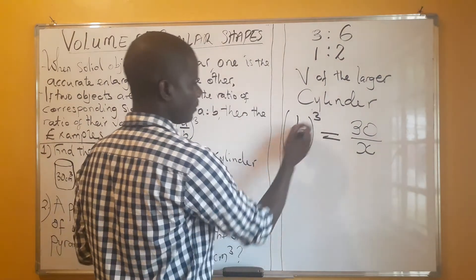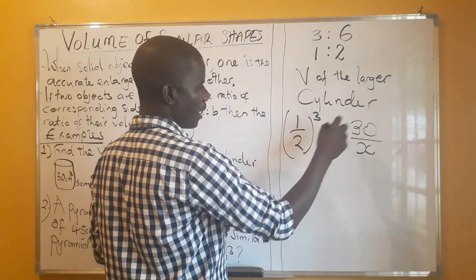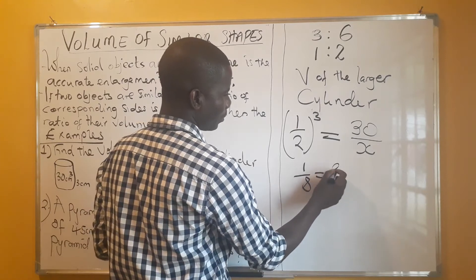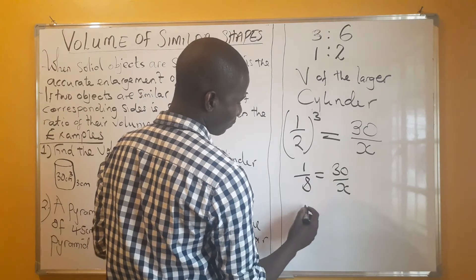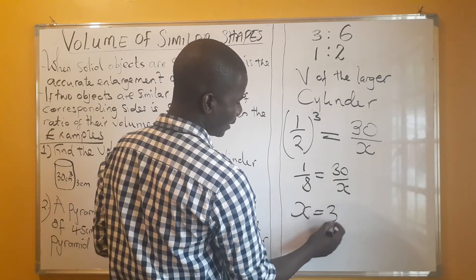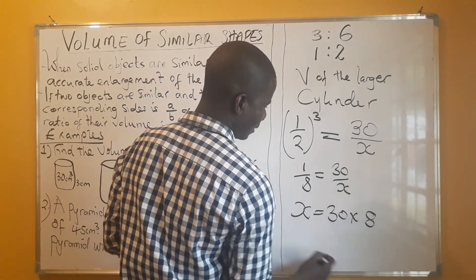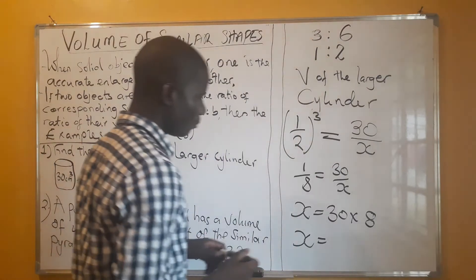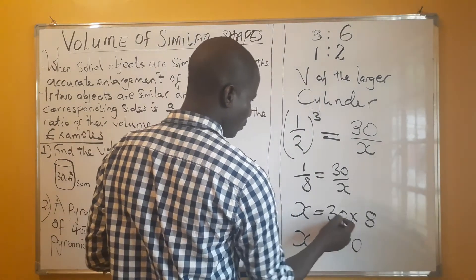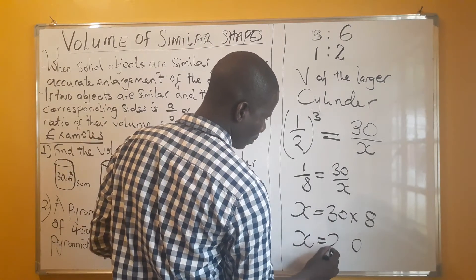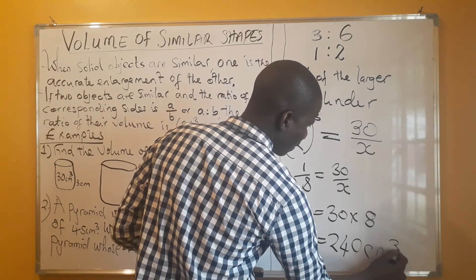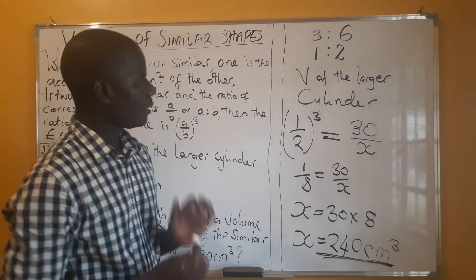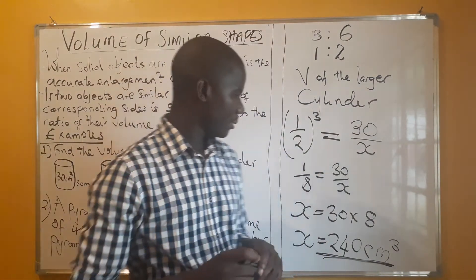When you cube the ratio: 1×1×1 = 1, and 2×2×2 = 8, giving us 1/8 = 30/x. Cross multiplying: x = 30 × 8, so x — the volume of the larger cylinder — equals 240 centimeters cubed.